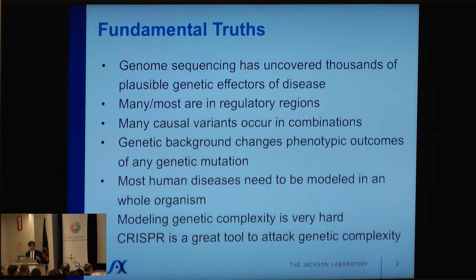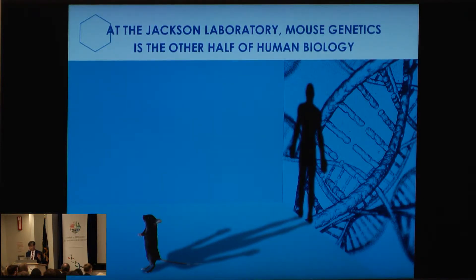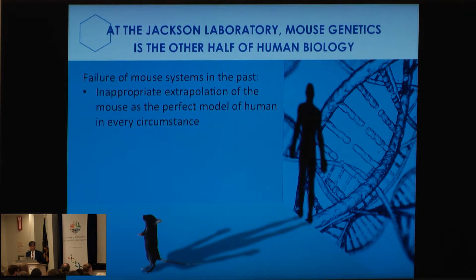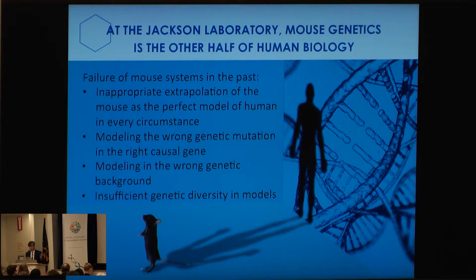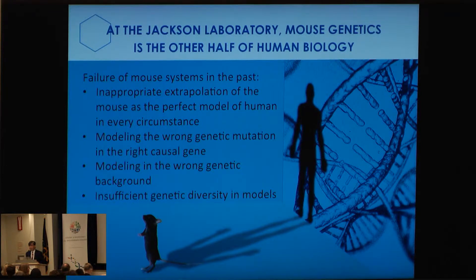We are very excited about the applications of CRISPR. At the Jackson Labs, we believe mouse genetics is the other half of human biology. There have been some criticisms of the mouse system — failures in the past because of inappropriate extrapolation of the mouse as the perfect model system for human disease, which is not true. One has to know the limitations of any model system. Modeling has been done frequently on the wrong mutation — a genetic knockout instead of the human variants. Modeling is often in the wrong genetic background, and when one tests these models, it's always on one genetic background with one mutation because of cost issues. If we want precise model systems, we have to have diversity of both the models and the mutations.